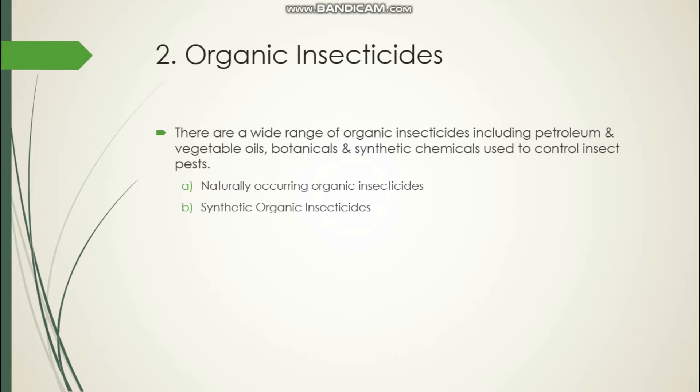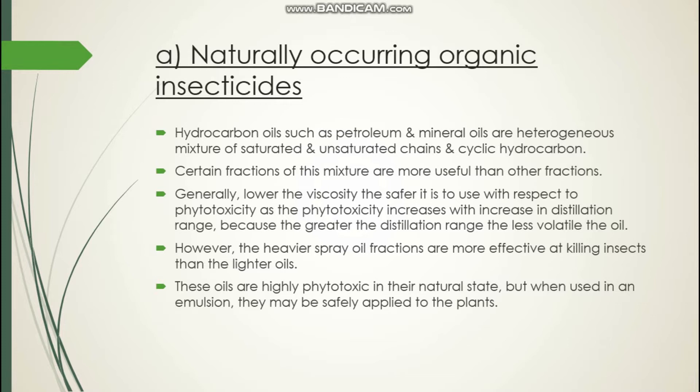The second type of insecticide is organic insecticide. There are a wide range of organic insecticides including petroleum and vegetable oils, botanicals and synthetic chemicals used to control insect pests. Organic insecticides are of two types: naturally occurring organic insecticides, which we find in nature and plants, and the second type, synthetic organic insecticides. We will now talk about naturally occurring organic insecticides.